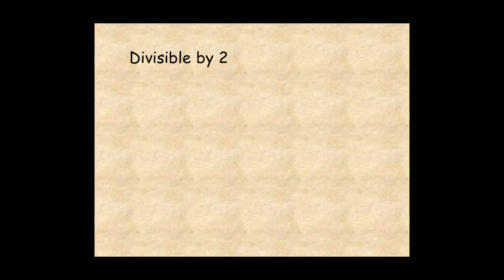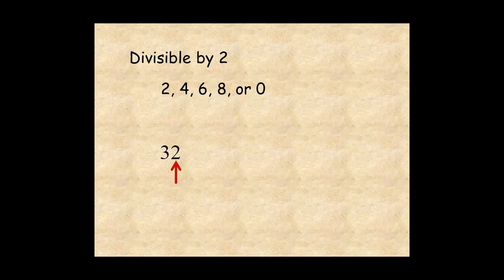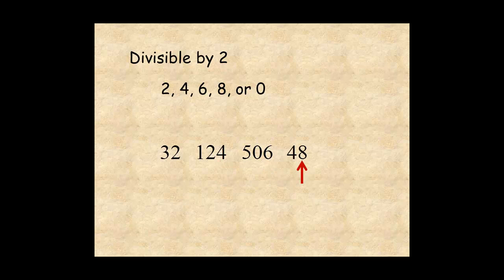A number is divisible by 2 if the last digit of the number is even — that is, if the last digit is equal to 2, 4, 6, 8, or 0. Examples would be 32, 124, 506, 48, and 200.